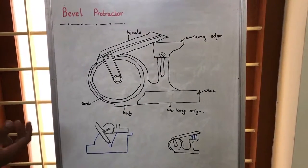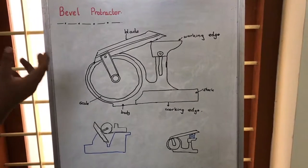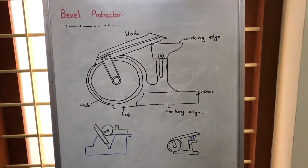The peculiarity is we can measure both obtuse and acute angles, and also V blocks can be measured.